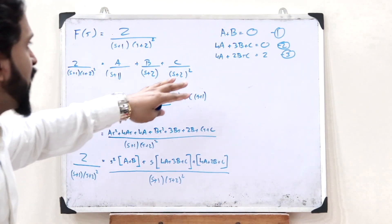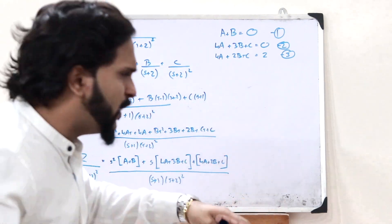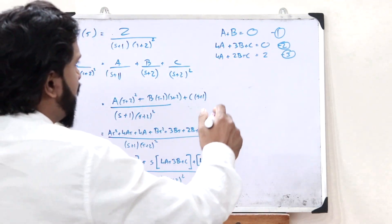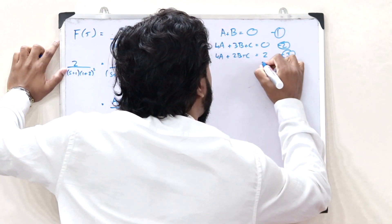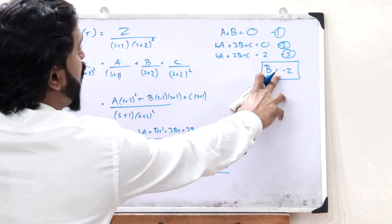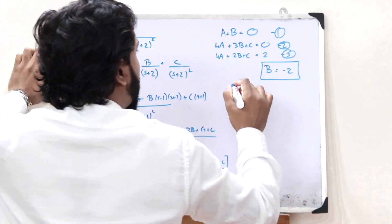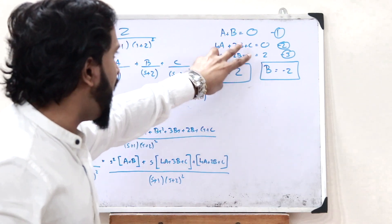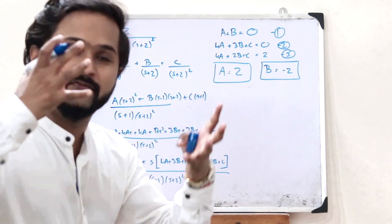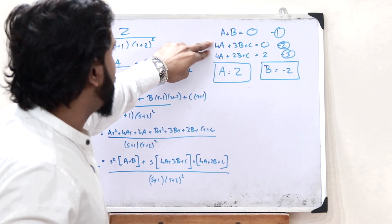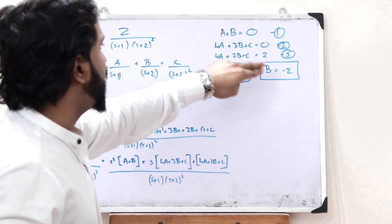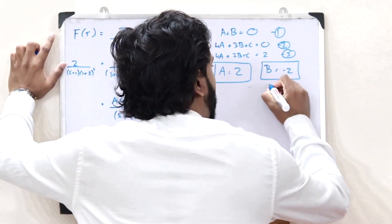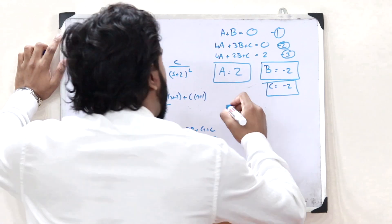Solving these three equations: subtracting equation 2 from equation 3 gives B = −2. Substituting B = −2 into equation 1 gives A = 2. Substituting A = 2 and B = −2 into equation 2: 8 − 6 + C = 0, so 2 + C = 0, therefore C = −2.